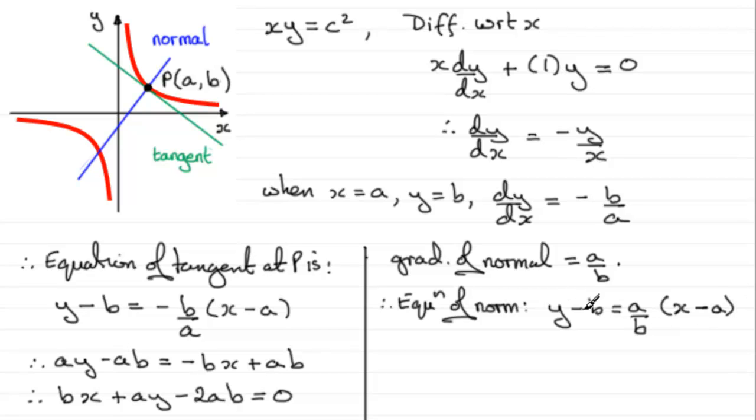Could multiply both sides by B now, and therefore we would get BY minus B squared equals, just be left with A times X minus A here, so if we expand that, we're going to get AX minus A squared.